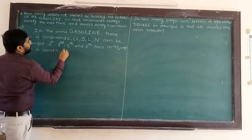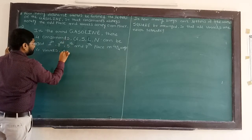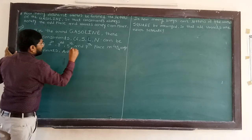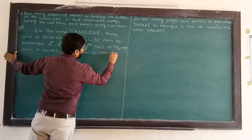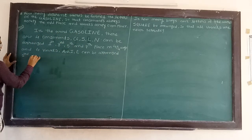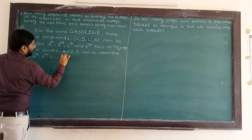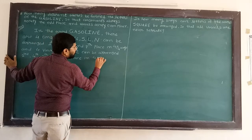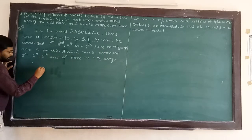There are four vowels: A, O, I, and E. These can be arranged at second, fourth, sixth, and eighth places, also in 4P4 ways.